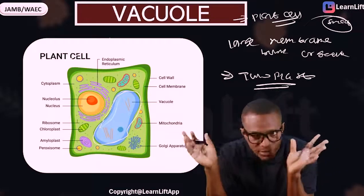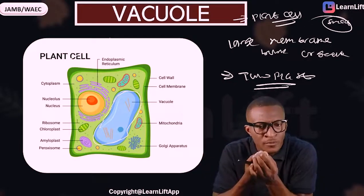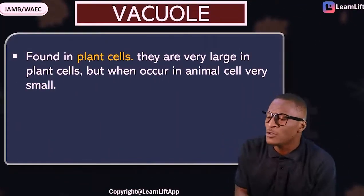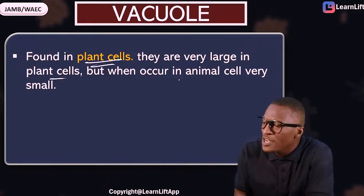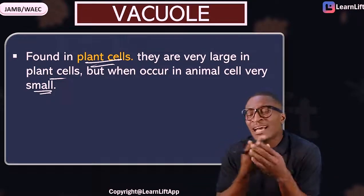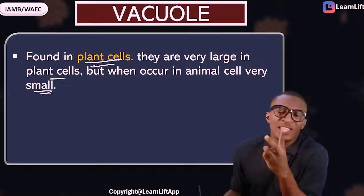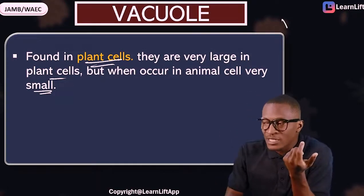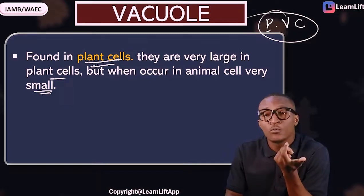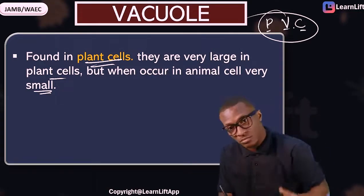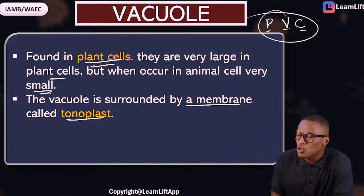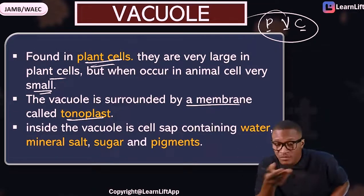Vacuoles are found in plant cells. They are absent in animal cells, or if present in animal cells, they are very small. Take note: vacuoles are very large in plant cells, but in animal cells they are either small or not present at all. The vacuole is surrounded by a membrane called the tonoplast.